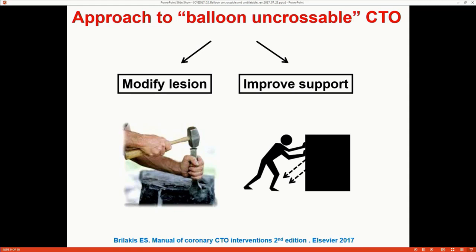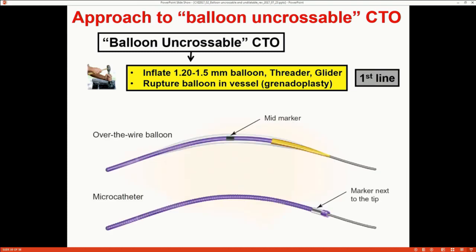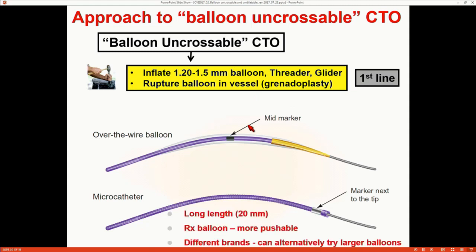There are two major categories of solutions: modifying the lesion, and improving your support. The first-line approach is to get a small balloon — 1.2 to 1.5 — or a threader, which is a combined balloon microcatheter, and try to get through. If it doesn't work, we do grenadoplasty, which is intentional rupture of a small balloon just into the lesion. That explosion can help modify the proximal cap. Small balloons are advantageous because the marker is in the middle segment, unlike larger balloons where the marker is at the tip.